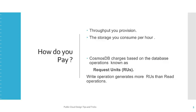You generally pay for the throughput you provision and the storage you consume per hour. Cosmos DB charges based on database operations known as request units. In Cosmos DB, write operations generate more request units than read operations, so you need to be very careful when designing with respect to cost and the number of operations you conduct.